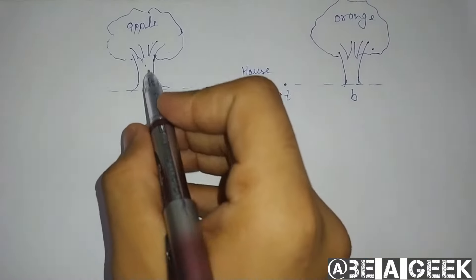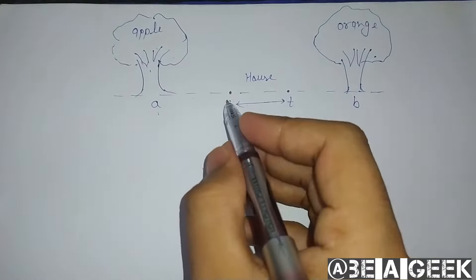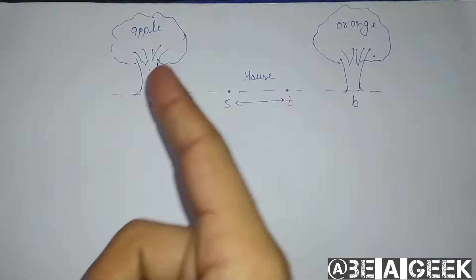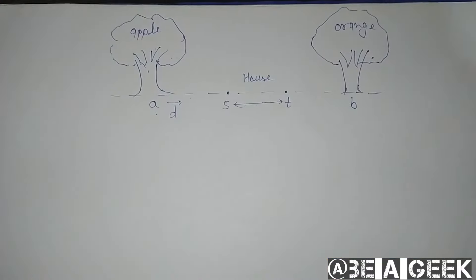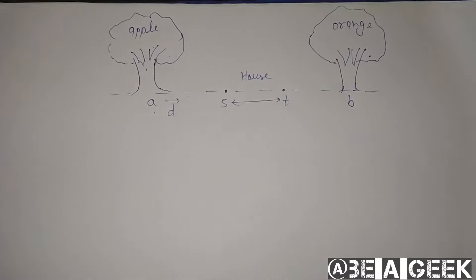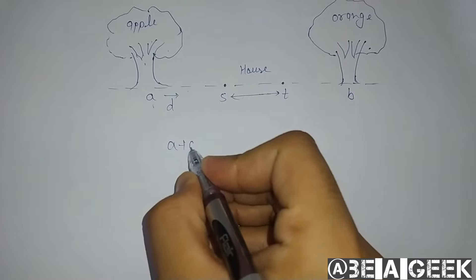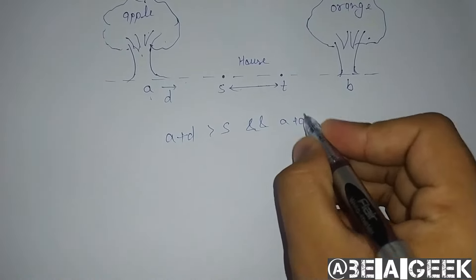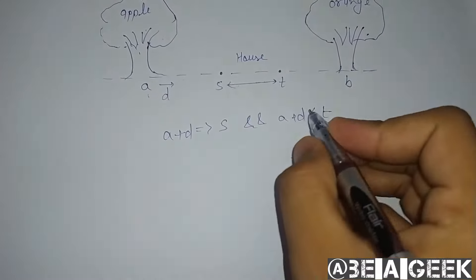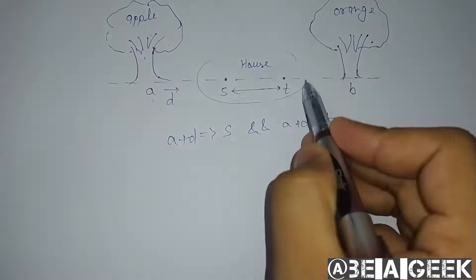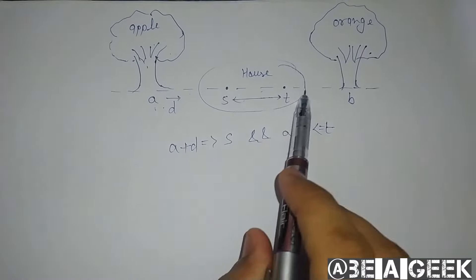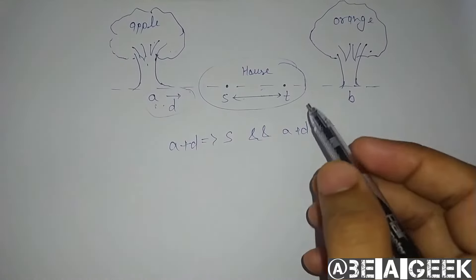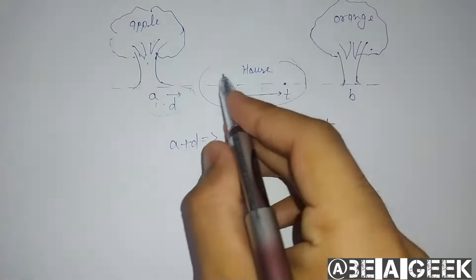For counting apples, when our value A plus D is greater than or equal to S and A plus D is less than or equal to T, then the apple falls within the house region. So the condition is: apple distance (A + D) >= S and (A + D) <= T.